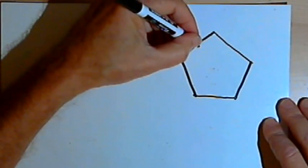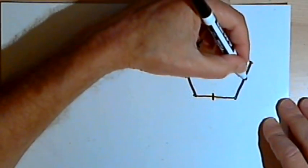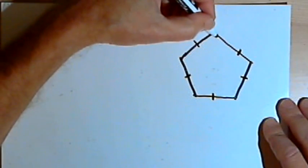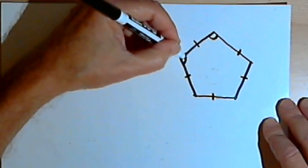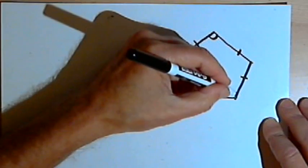So a regular polygon is a polygon where all the sides have the same length, in other words they're all congruent, and all the angles have the same measure, so they're also congruent.